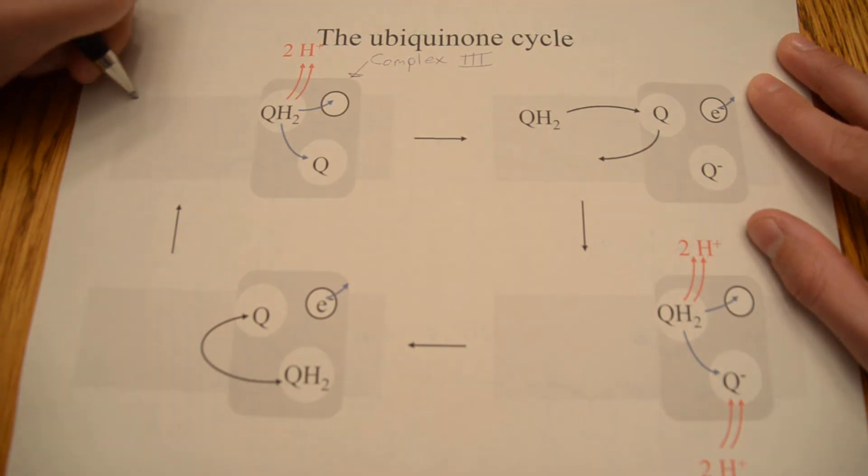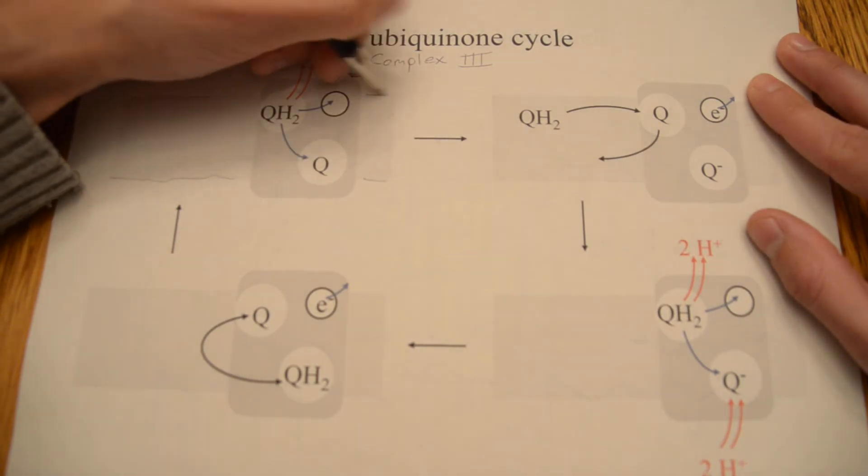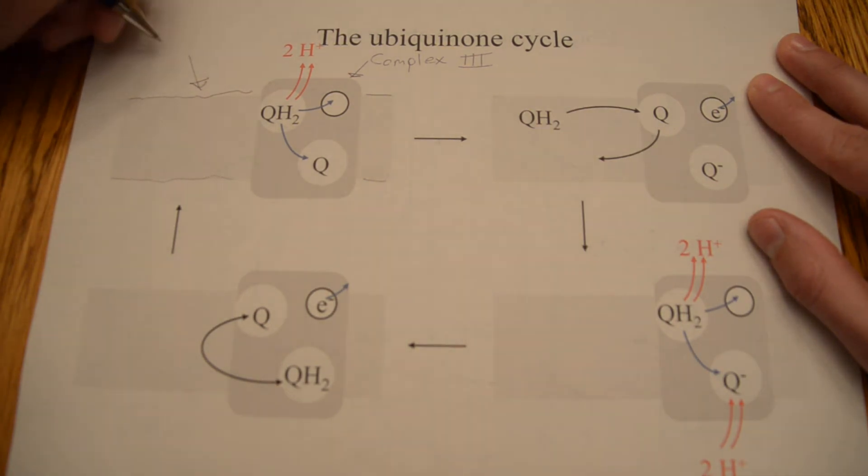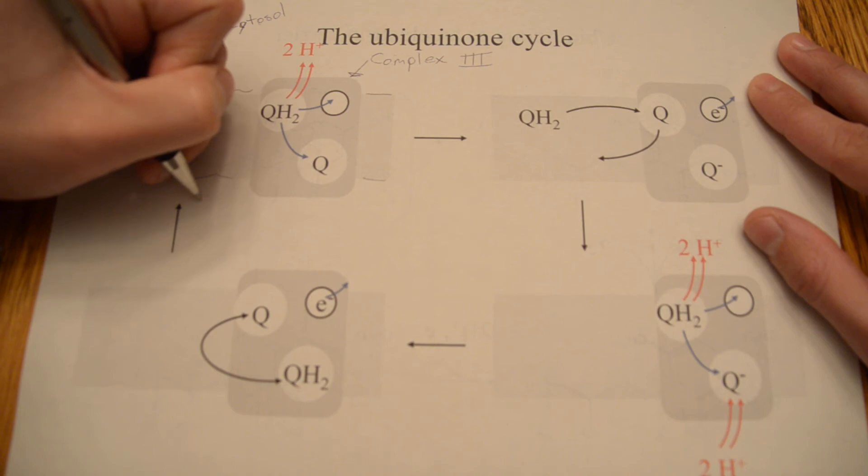And this is the intermitochondrial membrane. So, intermitochondrial membrane. On the outside here, we have the cytosol, or intermembrane space. And down here we have the matrix.